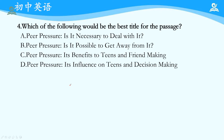第四题：Which of the following should be the title for the passage? A选项：Peer pressure, is it necessary to deal with it? 这不是全文重点。B选项：Is it possible to get away from it? 也没有重点探讨，而且作者呈现的是we are all influenced by peer pressure，它是普遍存在的。C选项：Its benefits to teens and friend making——benefits不能覆盖讲负面影响的段落。D选项：Peer pressure's influence on teens and decision making——influence是中心词，符合全文基调，全文一直在说行为改变和做决定的影响，所以选D。